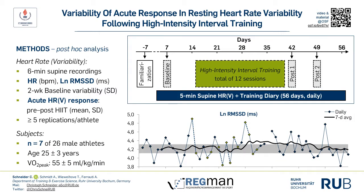The main study design is visualized in the upper figure. We recorded resting supine HRV measures for eight weeks — two weeks prior, during, and two weeks after the training period. Heart rate and the natural log of the RMSSD were calculated. Two weeks of baseline variability was assessed as standard deviation, and the acute HRV responses prior and post high intensity interval training were evaluated as means and standard deviations.